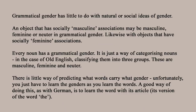Grammatical gender is something we're all probably aware of — plenty of European languages have it. But if we've never learnt one of those languages, we might not understand what it is. Grammatical gender has almost nothing to do with the social idea of gender. A piece of clothing normally worn by women, for example, could have masculine grammatical gender. All grammatical gender is is a system of classifying nouns. Old English had three grammatical genders: masculine, feminine, and neuter.